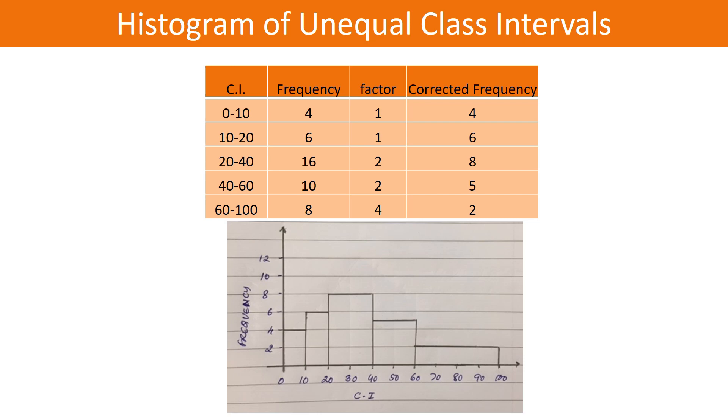Accordingly, the histogram drawn below represents the corrected frequency of the data. What is important in a histogram is that if you make a cutout of it, you should be able to balance it. It has to have a center point of balancing—that is the most important aspect of a histogram.